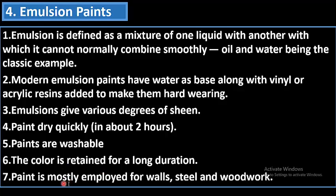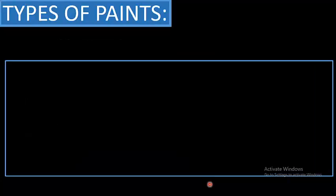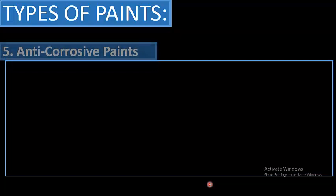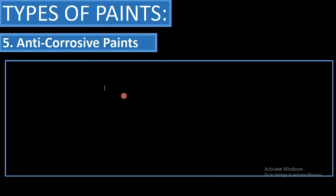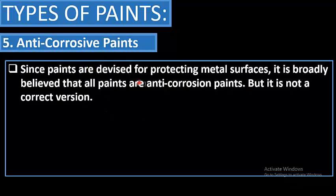Emulsion paint is mostly used for walls, steel, and woodwork. The fifth type is anti-corrosive paints, which are devised for protecting metal surfaces.